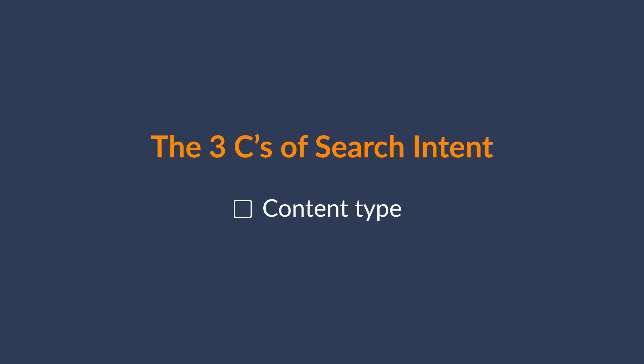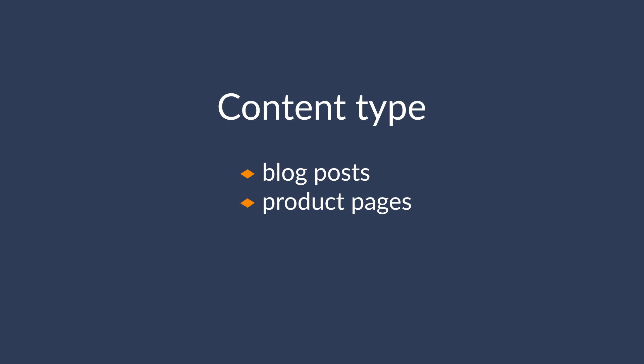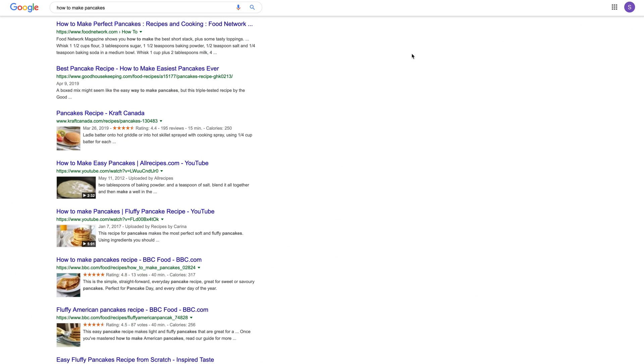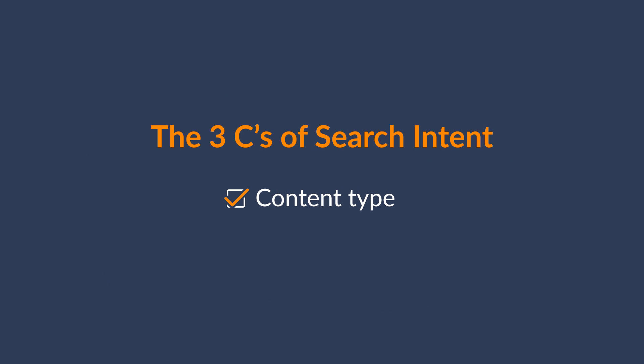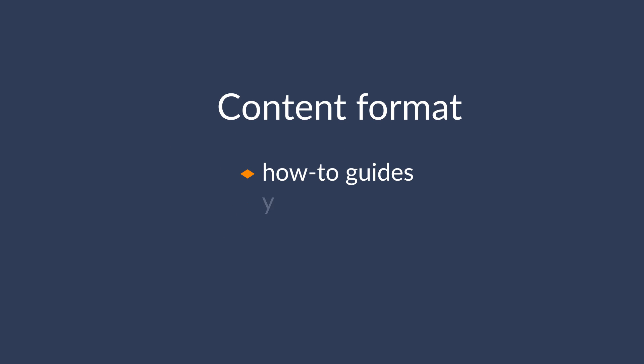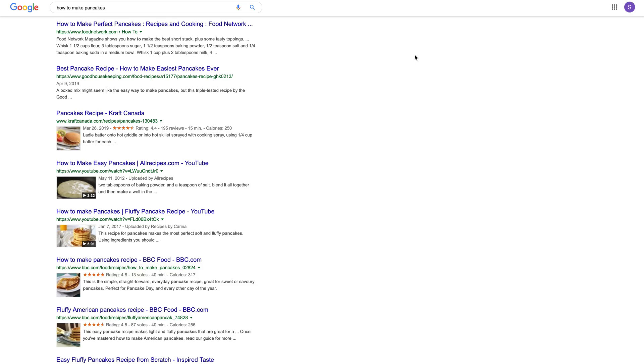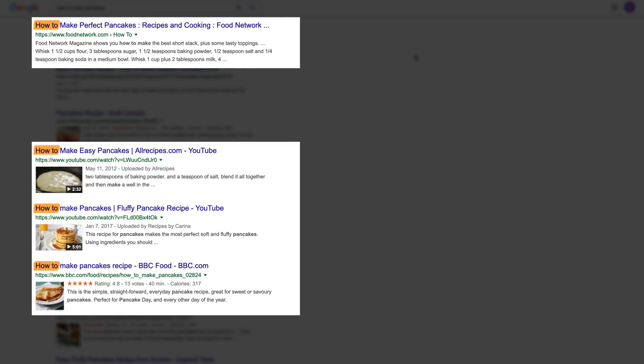The first C is content type, which can usually be categorized into blog posts, product pages, category pages, and landing pages. Looking at the top 10 results for 'how to make pancakes,' you can tell just from the titles that they're all blog posts. The second C is content format. When it comes to blog posts, a few common formats would be how-to guides, step-by-step tutorials, list posts, or opinion editorials. For our example, how-to's are the dominant format.